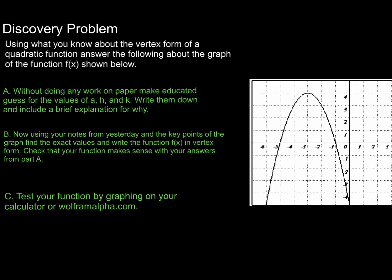The first and most important thing is to remember the vertex form of a quadratic, given by Y equals A times X minus H squared plus K. The A value is the same as in standard form — it dictates the basic direction of the function. A negative A value opens the parabola downward; a positive A value opens it upward. The bigger the A value, the narrower it is; the smaller the A value, the wider it is.